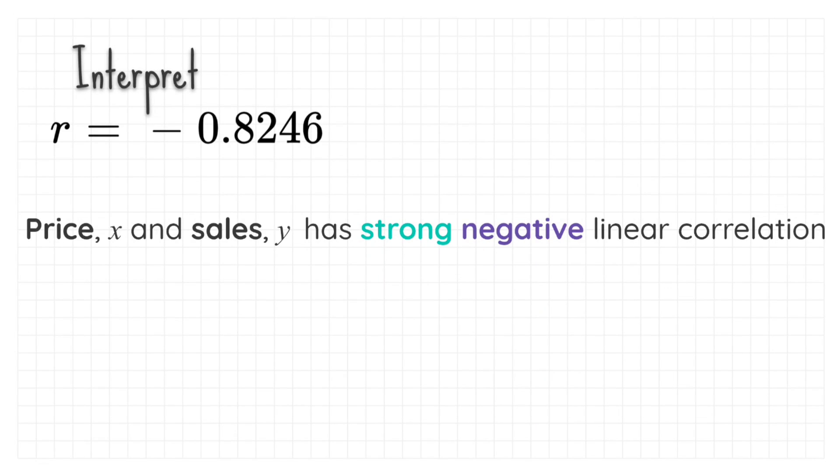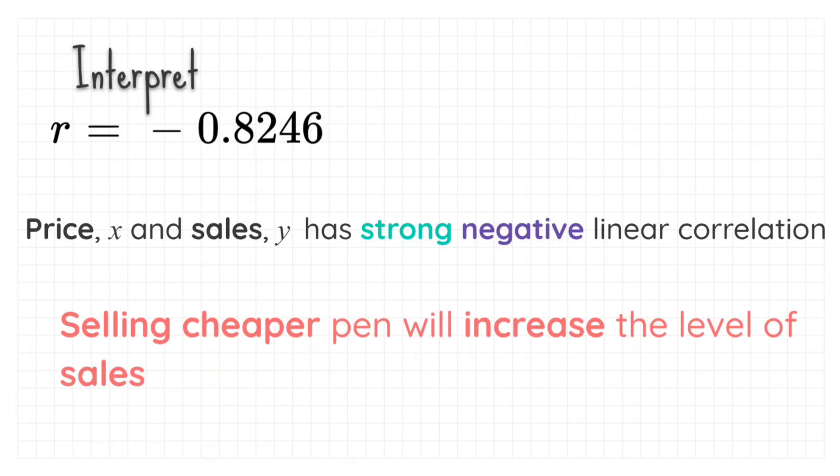In another word, selling cheaper pens will increase the level of sales. This is an example of inverse relationship.